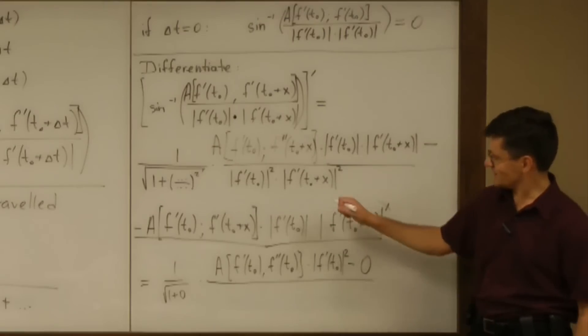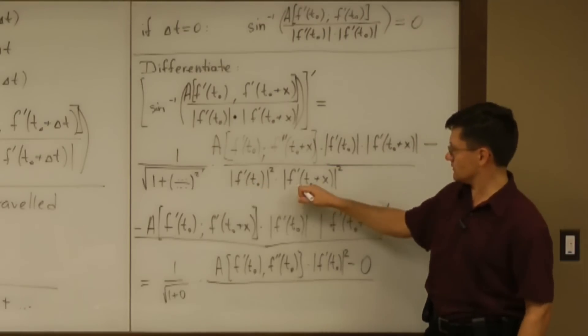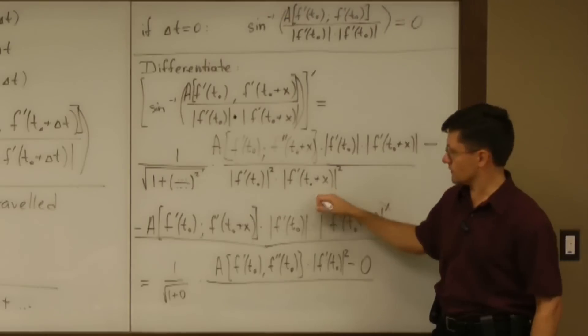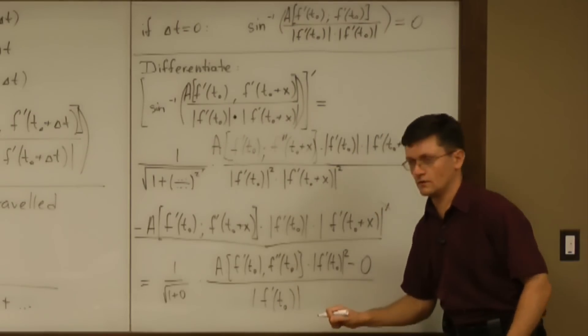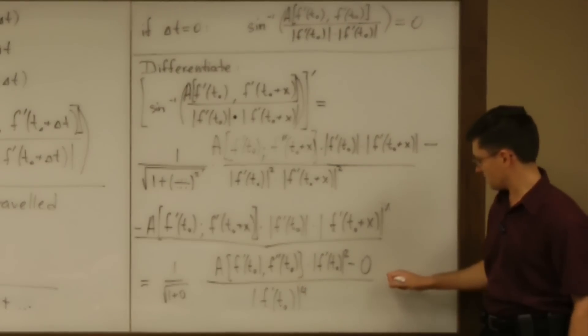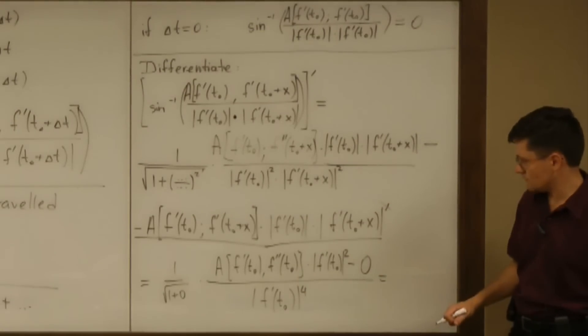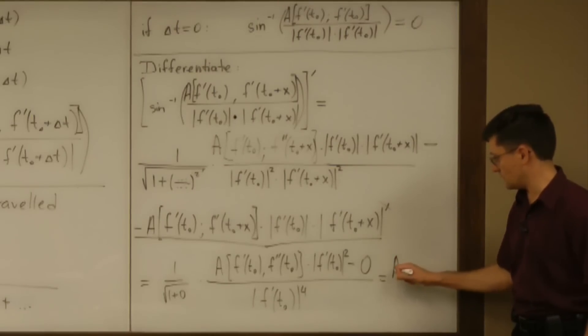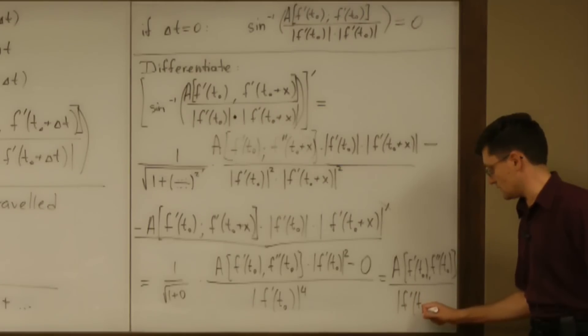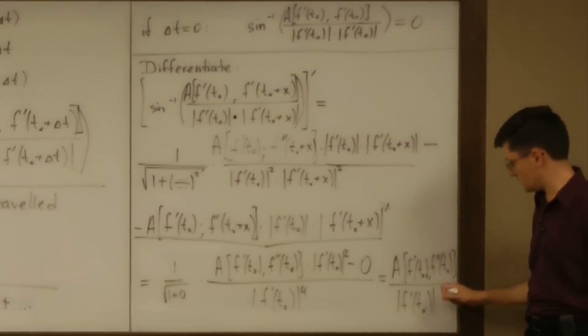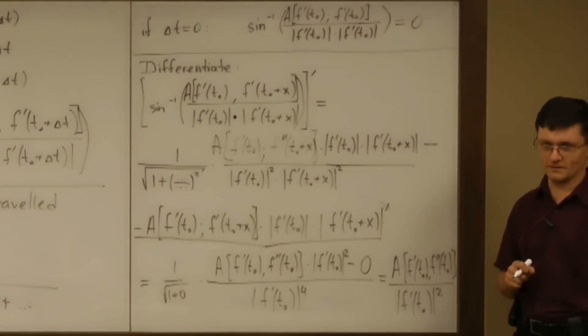Lucky us. And we divide by magnitude of f prime of t zero, magnitude of f prime of t zero. So the whole thing is magnitude of f prime of t zero to the power of what? Four. And the whole thing is area on f prime of t zero, f double prime of t zero, divided by magnitude of f prime of t zero squared. Does it remind you of something? Is it exactly the same thing?